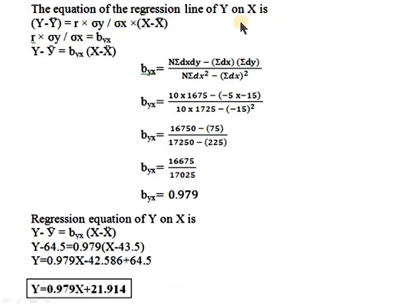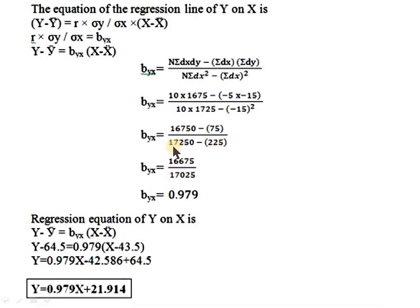Now we find b_yx using the formula: b_yx equals (n·Σdx·dy − Σdx·Σdy) divided by (n·Σdx² − (Σdx)²). Substituting: numerator is 10×1675 − (−5×−15) equals 16750 − 75 equals 16675. Denominator is 10×1725 − (−15)² equals 17250 − 225 equals 17025. So b_yx equals 16675/17025.